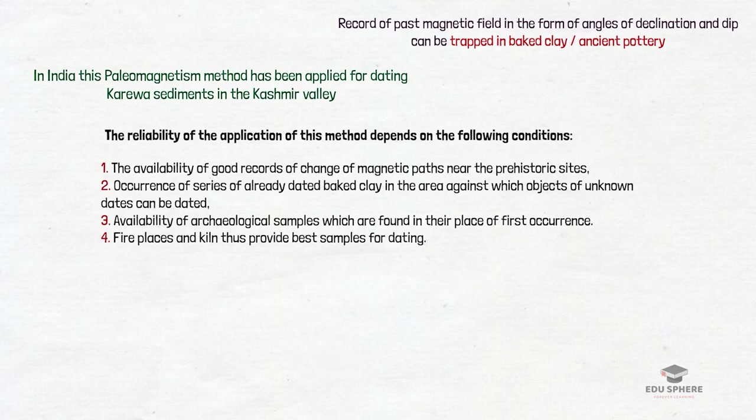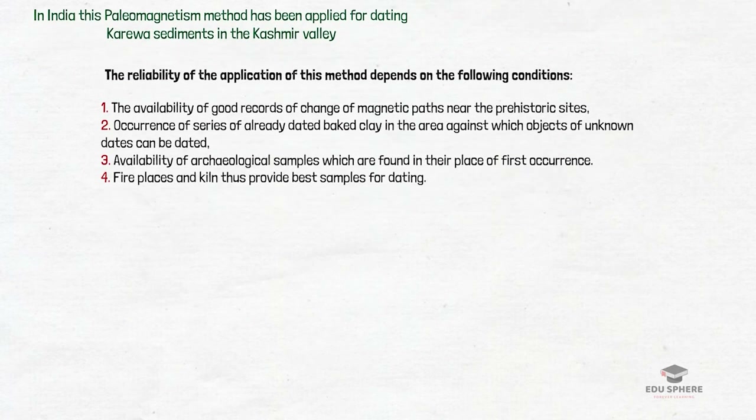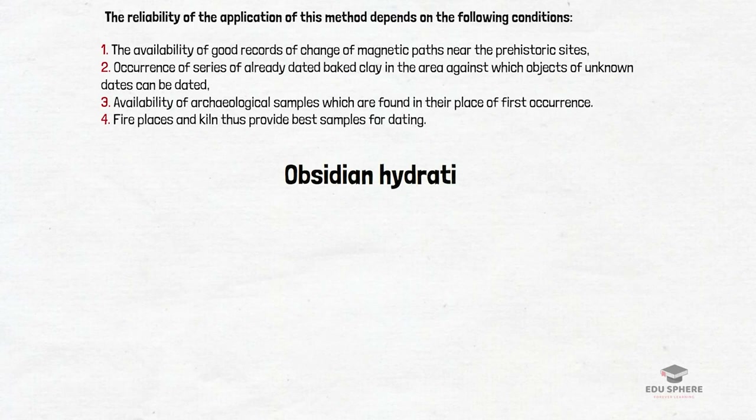The reliability of this method depends on certain conditions: the availability of good records, the occurrence of a series of already-dated baked clay in the area against which objects of unknown dates can be dated, and the availability of archaeological samples, fireplaces, and kilns which provide the best samples for dating. These are the preconditions which make the use of paleomagnetism for archaeological dating suitable for a particular place.